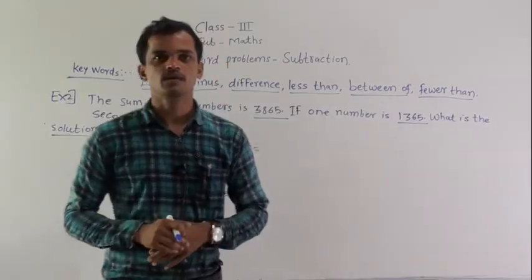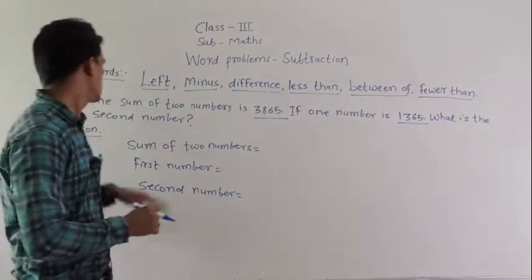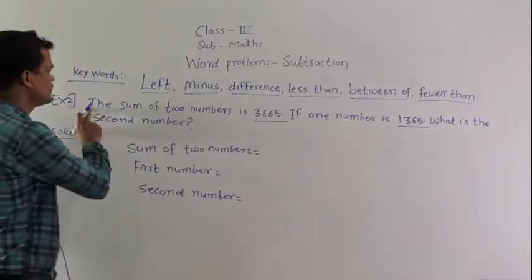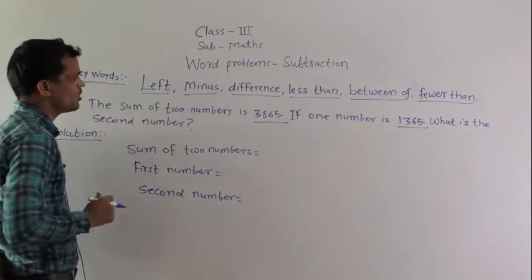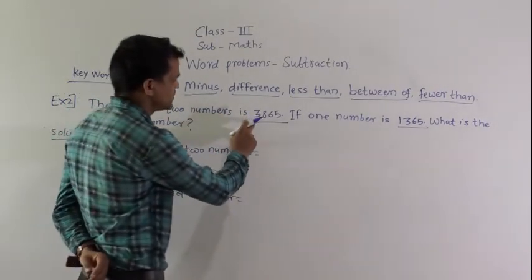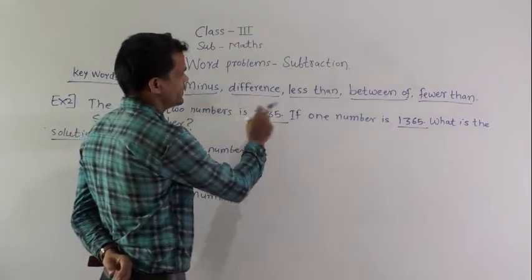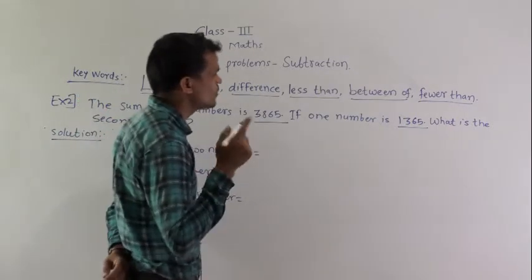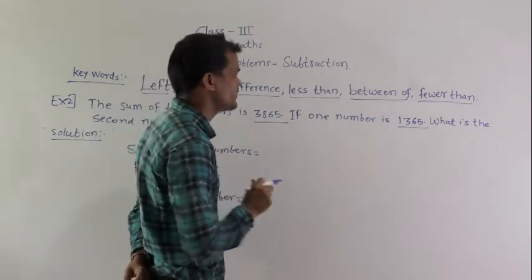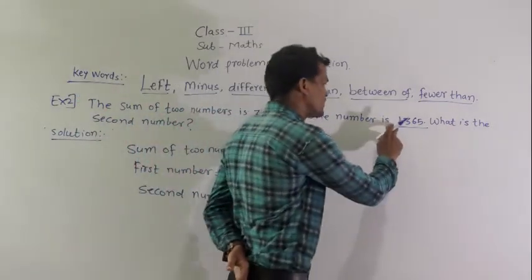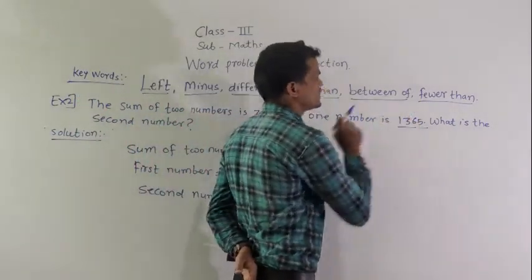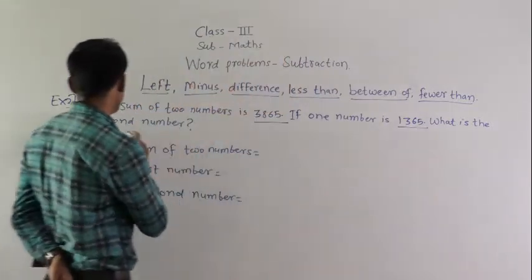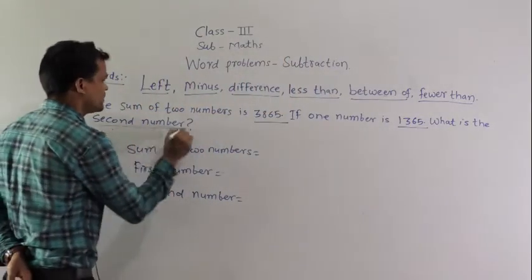Example 2: The sum of two numbers is 3865. If one number is 1365, what is the second number?